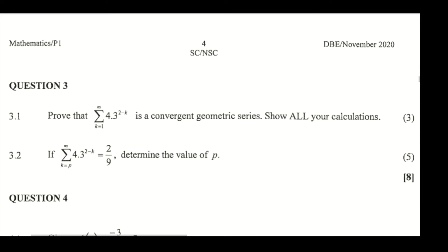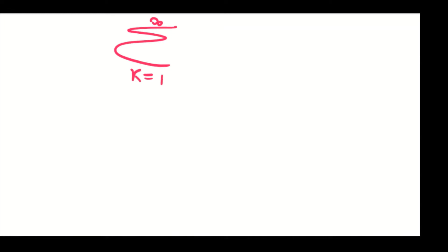Okay, so question 3, 3.1 — we are asked to prove that the sum given is a convergent geometric series, so we must show all calculations. To prove that this sum converges, we need to first identify the first three terms of the sequence.